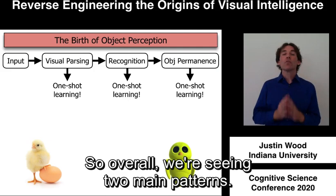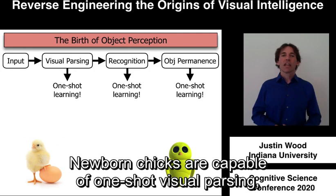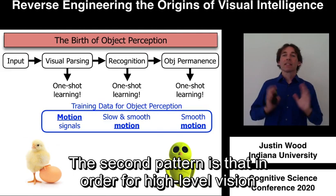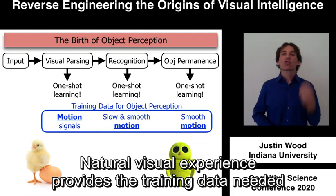So overall we're seeing two main patterns. The first pattern is that newborn brains can develop high-level object perception rapidly from sparse visual input — newborn chicks are capable of one-shot visual parsing, one-shot view-invariant object recognition, and one-shot learning of object permanence. The second pattern is that in order for high-level vision to develop, newborn brains need experience with a slow and smooth visual world. Natural visual experience provides the training data needed to develop object perception.